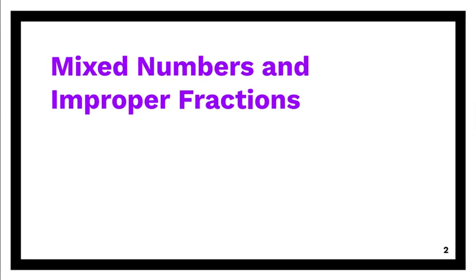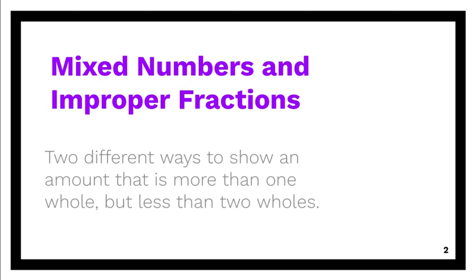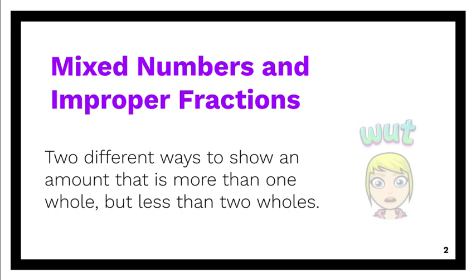Mixed numbers and improper fractions are related to each other. They are two different ways that you can show an amount that is more than one whole, but less than two wholes.